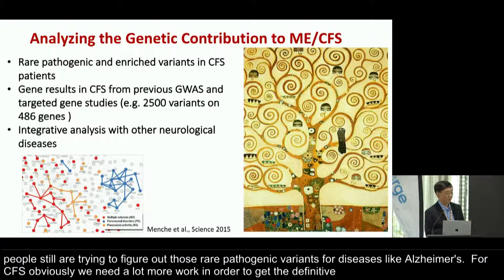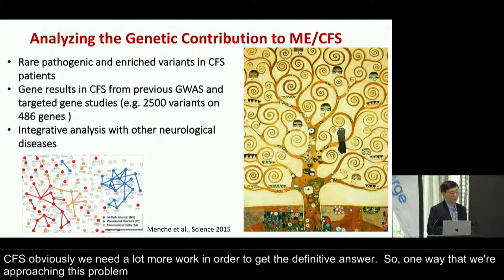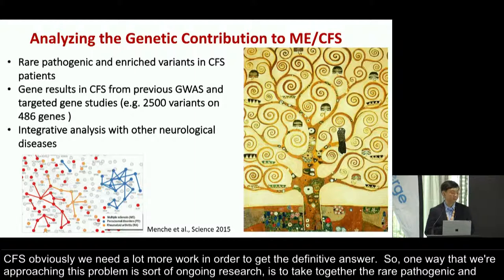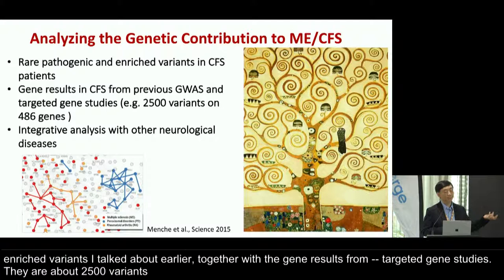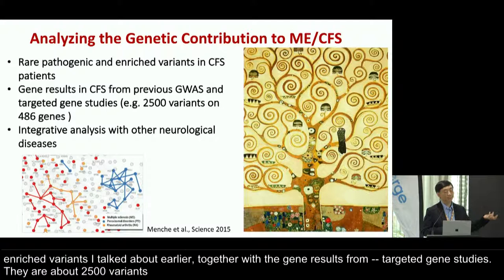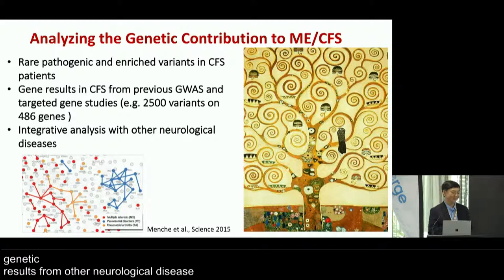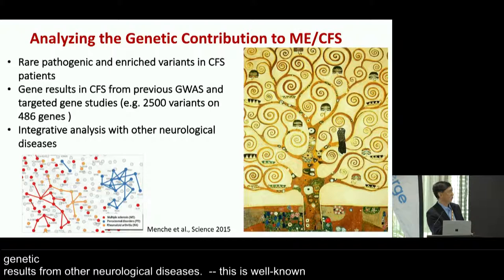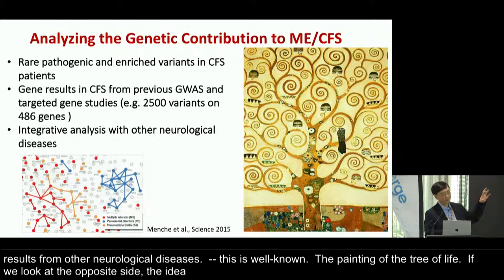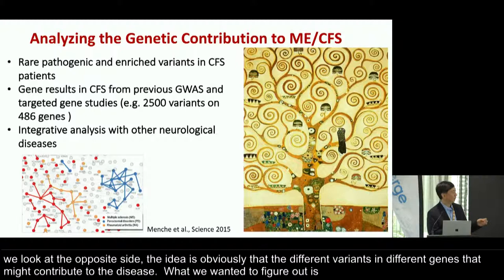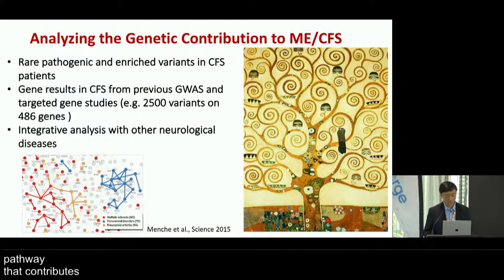One approach we're taking is to combine the rare pathogenic and enriched variants I discussed, together with gene results from previous GWAS and targeted gene studies — about 2,500 variants have been mentioned so far — and compare those genetic results with findings from other neurological diseases. The idea is that different variants in different genes may converge on common pathways that contribute to the disease process, and hopefully we can find that common impact soon.